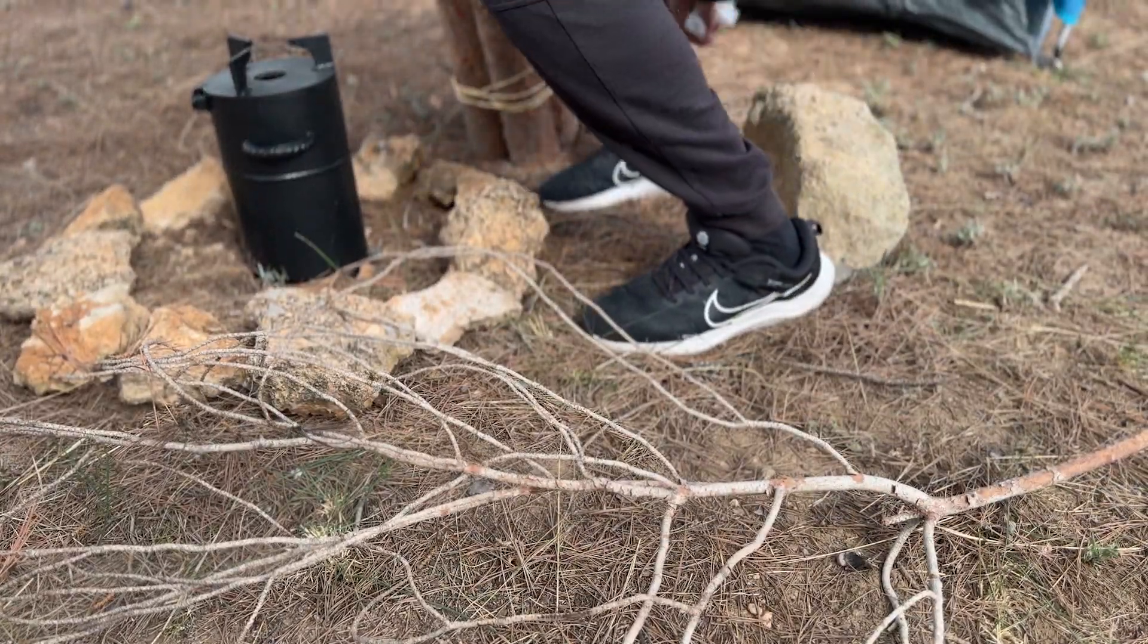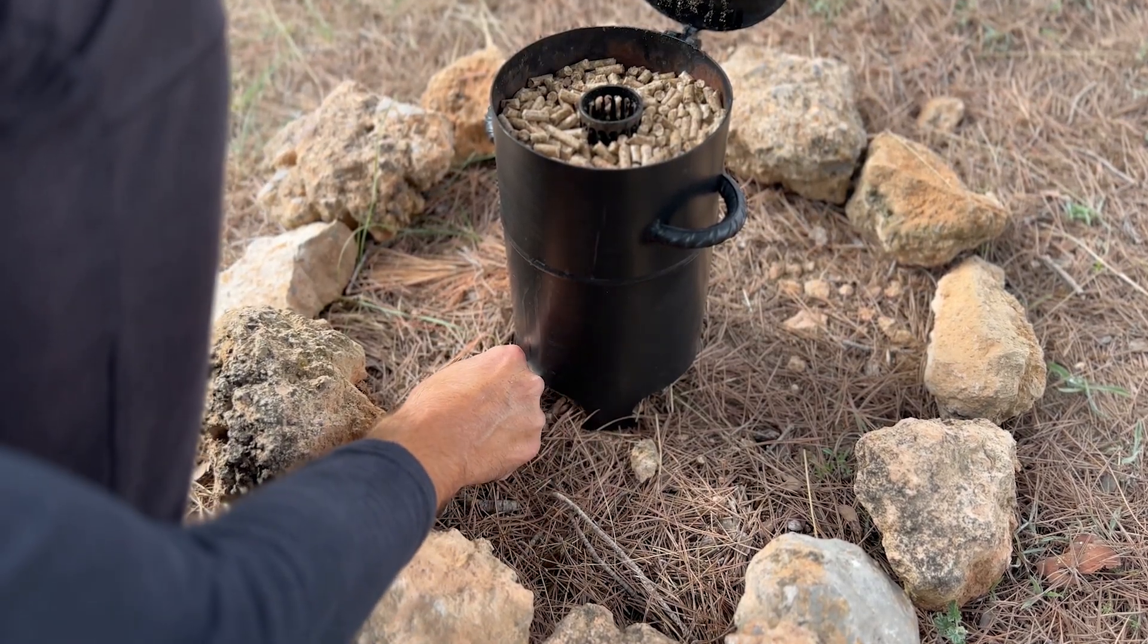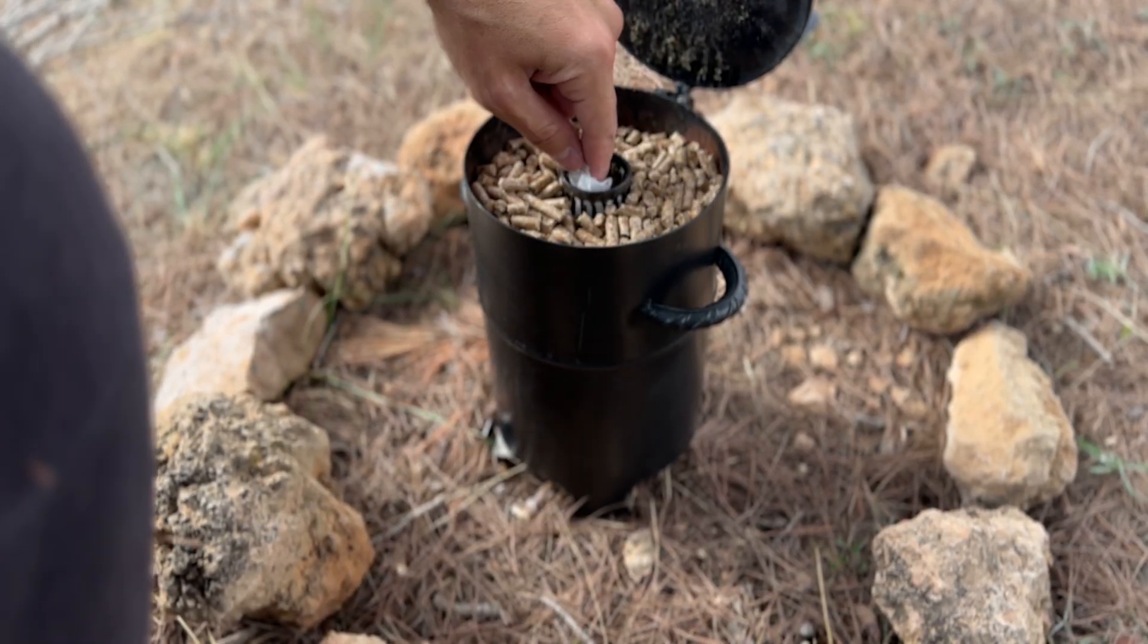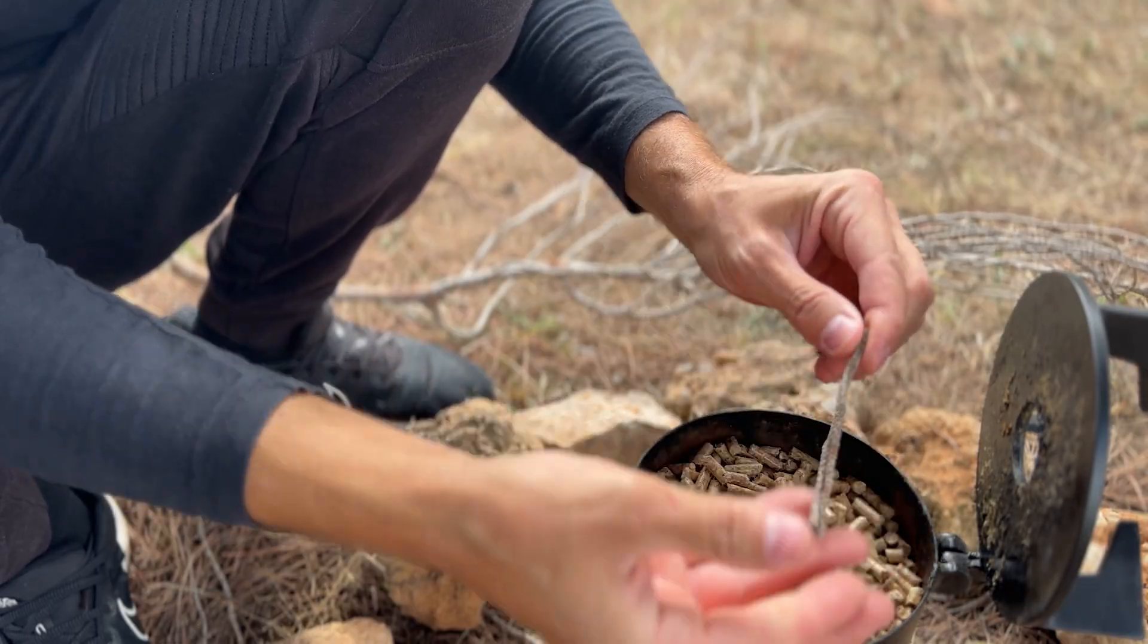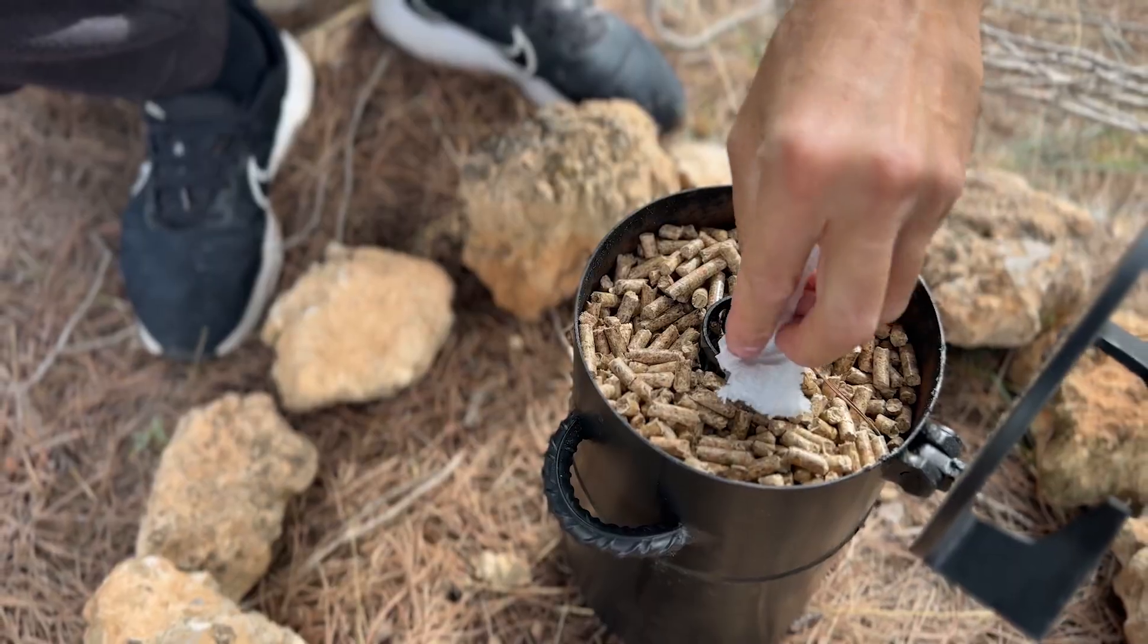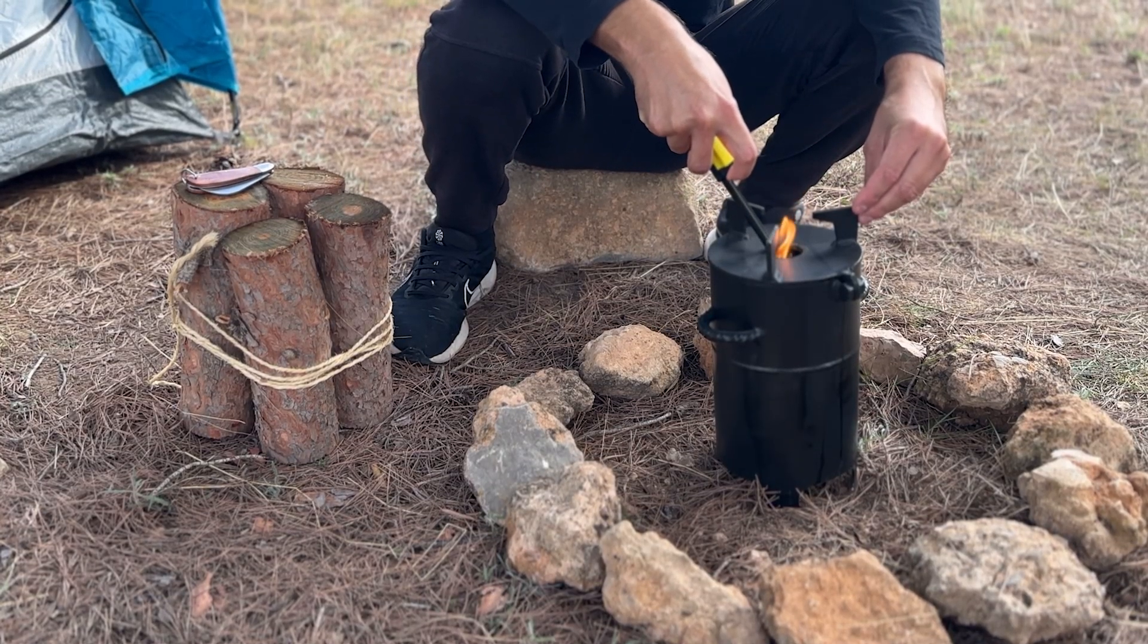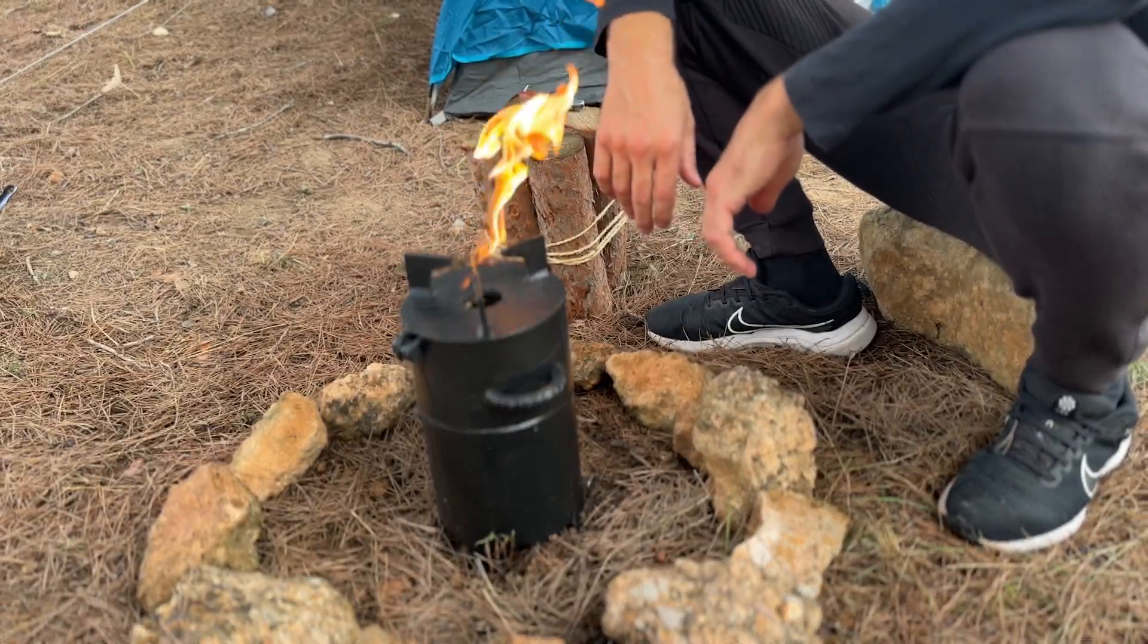Now to start combustion, we'll place small, dry branches and some paper inside the inner cylinder. The operating principle of the pyrolytic stove is decomposition by heat without oxygen. This means that when the pellets begin to heat up inside the lower compartment, they don't yet burn, but instead release combustible gases such as carbon monoxide, hydrogen, and methane.